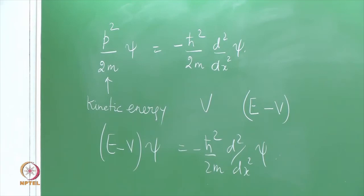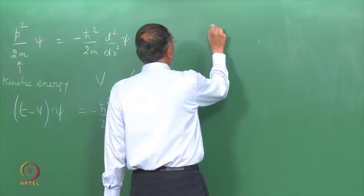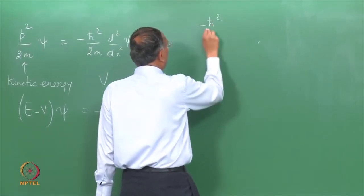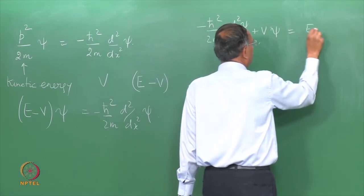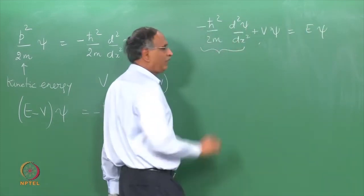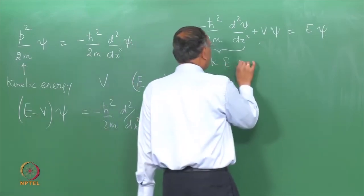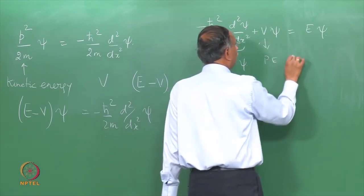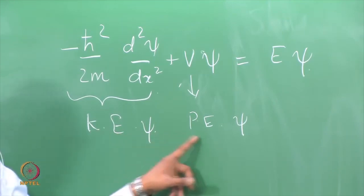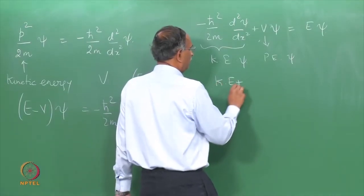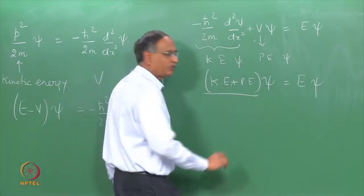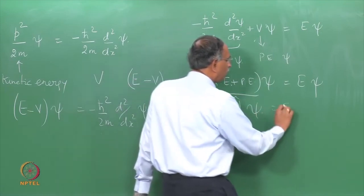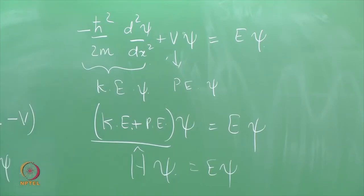One last step and we see the equation H·ψ = E·ψ making sense. Rewriting: −ℏ²/(2m) · d²ψ/dx² + V·ψ = E·ψ. The first term is the kinetic energy on ψ and the second is the potential energy on ψ. Together, kinetic energy plus potential energy acting on ψ gives a constant E times ψ — this is nothing but the Hamiltonian operator acting on ψ giving E·ψ.